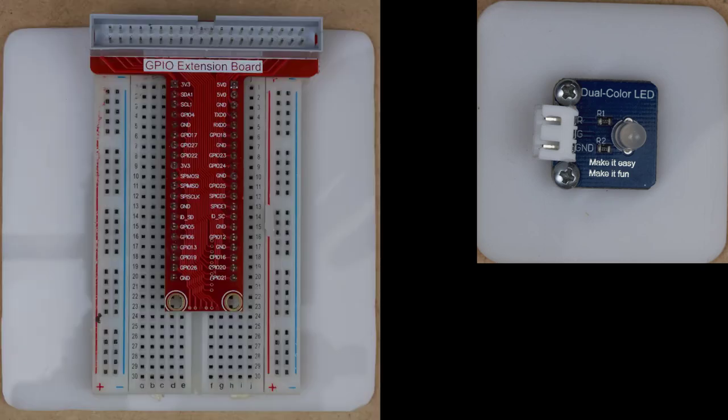We're now going to connect our dual color LED to our breakout board, which will connect to the GPIO of the Raspberry Pi. So remove the dual color LED and place it on your board. We will also need a three pin wire.